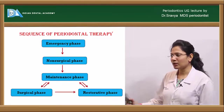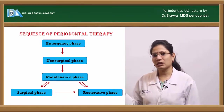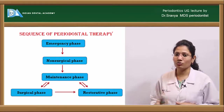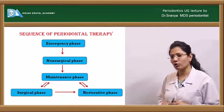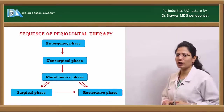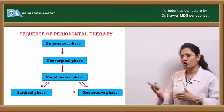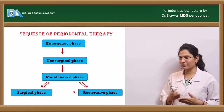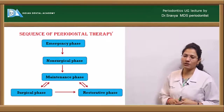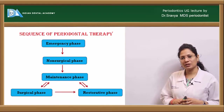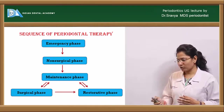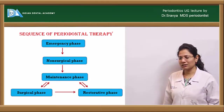This is the correct sequence of periodontal therapy. The emergency phase, if needed, is followed by the non-surgical phase. Immediately after the non-surgical phase comes a maintenance re-check of periodontal tissue conditions, after which you decide whether to proceed to the surgical phase. Following surgery, there is another re-evaluation, then you move to the restorative phase. After restoration is complete, you return again to the maintenance phase, periodically recalling the patient to evaluate status and detect any pathological changes at the earliest stage.